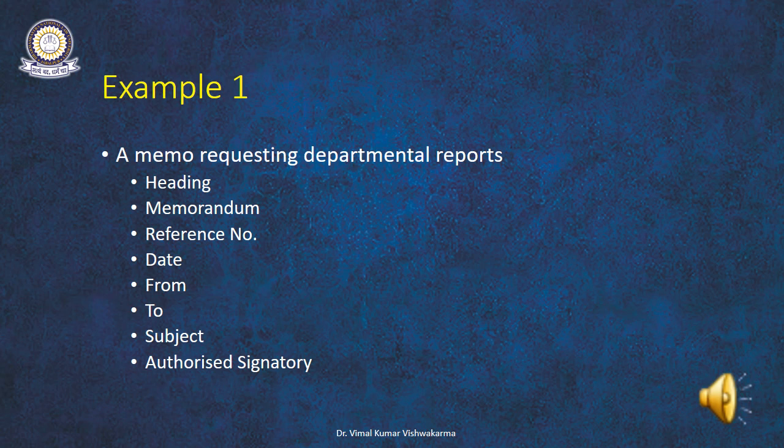Let us now examine sample memos. Example one is a memo requesting departmental reports. The components are: heading, then 'Memorandum,' reference number, date, from, to, subject, and authorized signatory. The heading — for example, 'Bharat Oil Products Limited, Mumbai' — should be centralized. After this, write 'Memorandum' or 'Memo,' which is the clipped form. This should also be centralized.